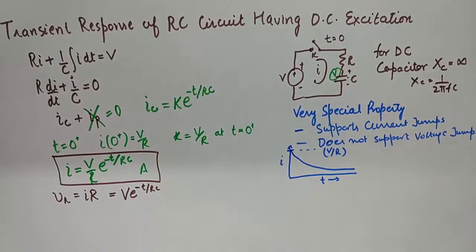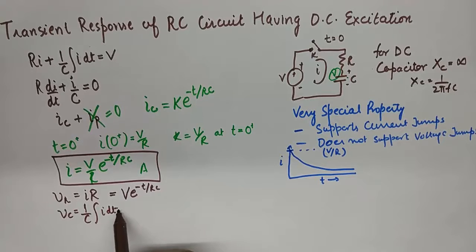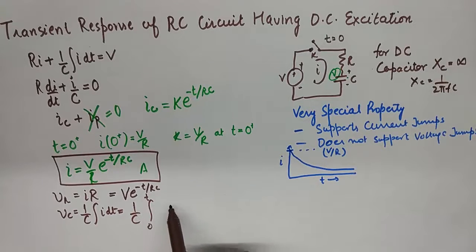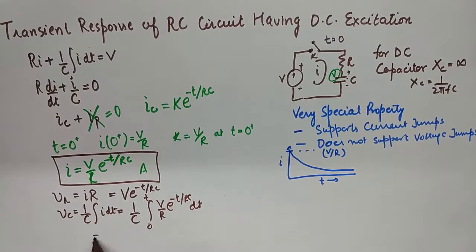And the voltage across capacitor is equal to 1/C ∫i dt. And from time t0 to t we get V/R e^(-t/RC) dt which equals V(1-e^(-t/RC)).